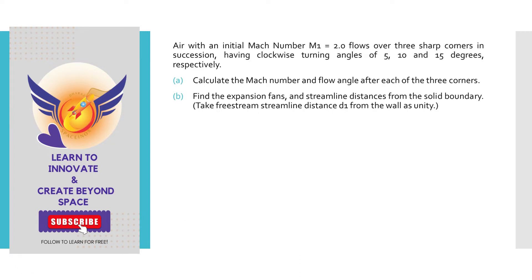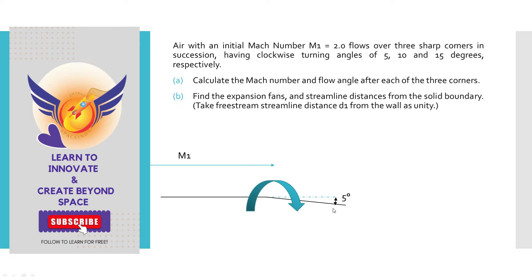As per the given question, the initial Mach number is given with a clockwise turn of 5 degrees with respect to the horizontal. Further, we have another inclination of around 10 degrees from that point, and then the third clockwise turn is around 15 degrees.